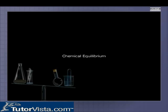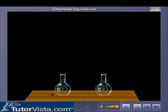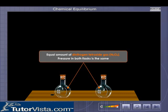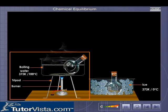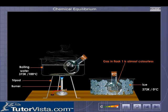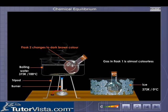For this chemical equilibrium demonstration, take two flasks and number them one and two. Fill the flasks with equal amounts of dinitrogen tetroxide gas N₂O₄ so that the pressure in both flasks is the same. Now place flask one in ice and flask two in boiling water at 100 degrees centigrade. You will observe that the gas in flask one is almost colorless, but in flask two the gas is dark brown.